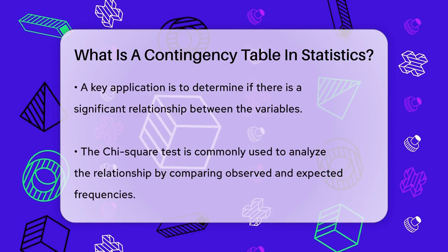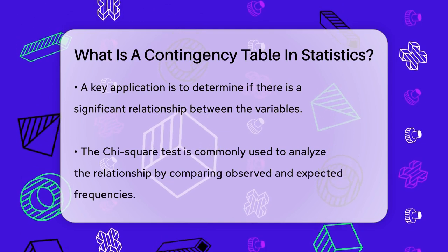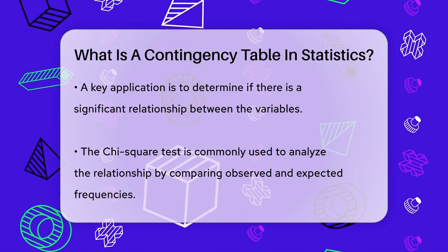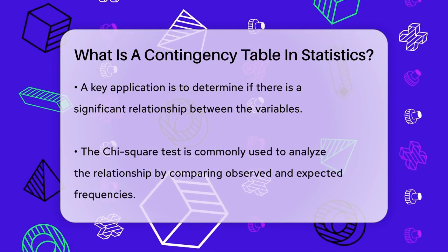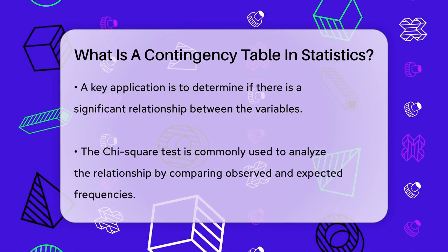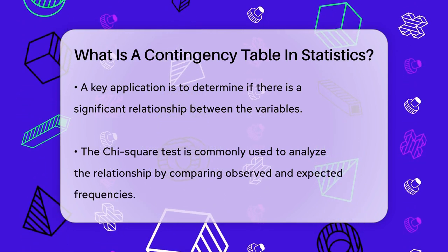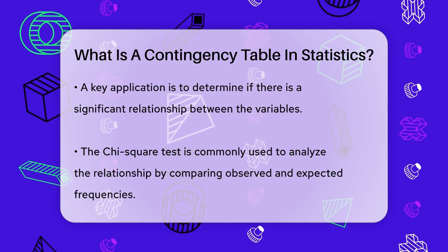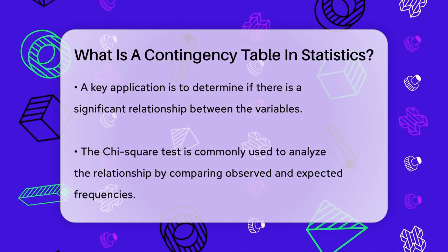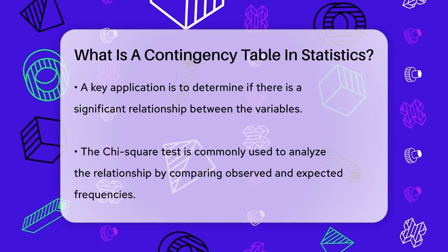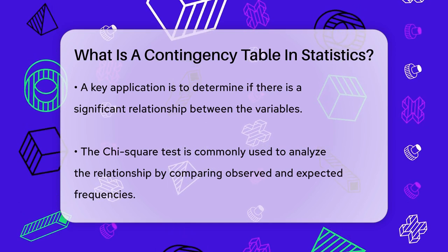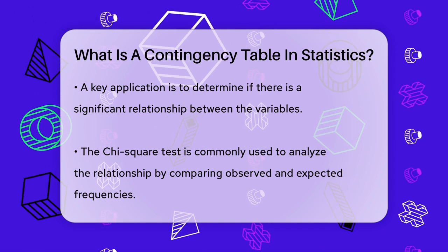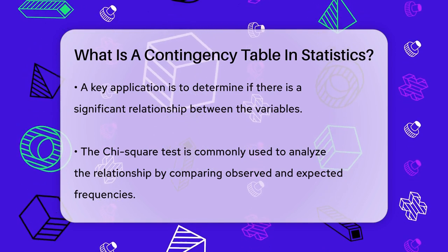If the results show a significant difference, it indicates that there is a relationship between the variables. For instance, if you're analyzing whether customers' future buying patterns are related to their experience with a product, you would create a contingency table showing the frequencies of different customer experiences and their corresponding buying patterns. Then you would use a chi-square test to see if there is a statistically significant relationship.